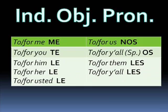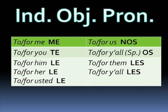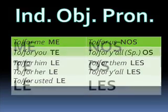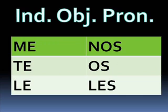Here's a list of the indirect object pronouns in Spanish. 'To or for me' — me. 'To or for you' informal — te. 'To or for him, her, or usted' the formal you — le. 'To or for us' — nos. 'To or for y'all' informal, used in Spain — os. 'To or for them or y'all' plural third person — les. So: me, te, le, nos, os, les.